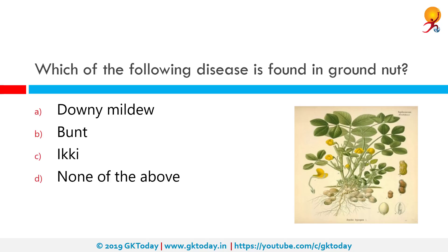Which of the following disease is found in groundnut? The correct answer is stem rot. Stem rot of groundnut is caused by the fungus Sclerotium rolfsii. This disease is also known as southern blight, white mold, southern stem rot and Sclerotium rot.